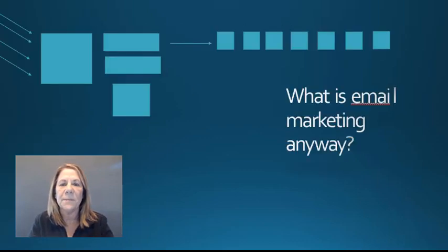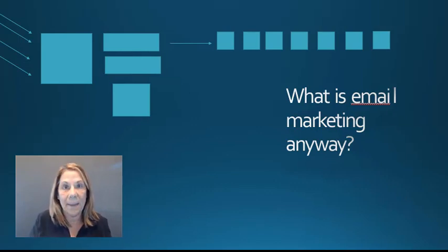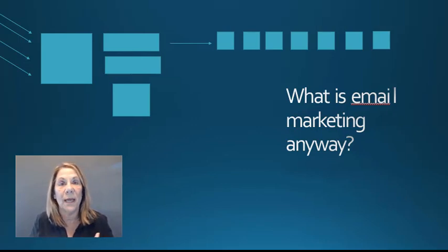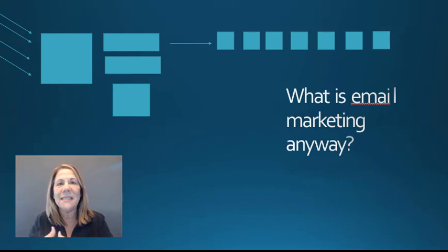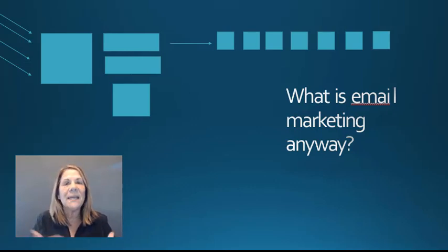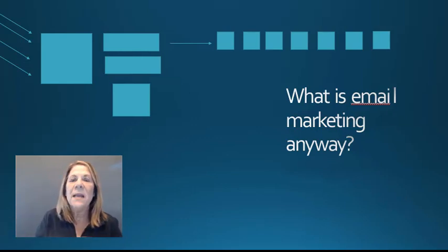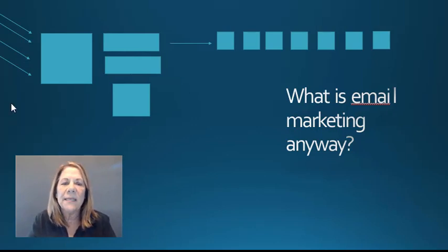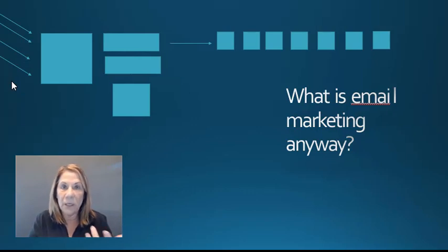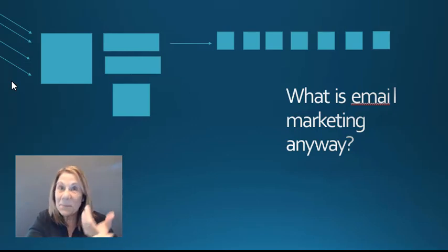Basically, email marketing is a system that's automated — this is where passive income can happen, and that's what most people are looking for with online business. Once you set it up, it keeps working when you're doing something else. Email marketing is when you use your social media platform — whether it be YouTube, Instagram, LinkedIn, Facebook, Twitter — all those different platforms.